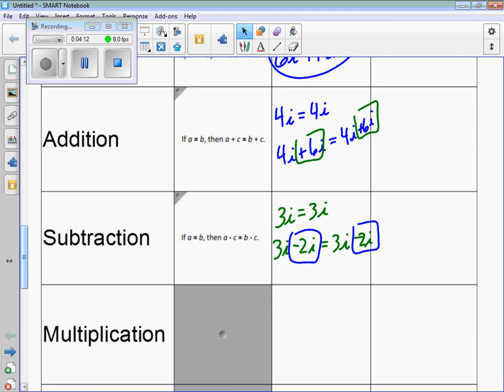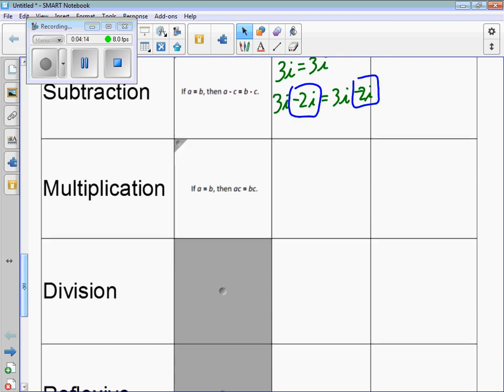Multiplication, same thing. So if you have i equals i, if you multiply by the same number on the left side, you can also multiply by the same number on the right side. So multiply by 3 and multiply by 3. Multiplying by 3 on both sides, that's showing multiplication while keeping the equation equal.